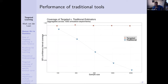Beyond that, traditional statistics relies on simple models like linear regression to be correctly specified. As a consequence, if you think about confidence intervals, due to the bias they will get narrower and narrower as sample size increases around something which is wrong, and so the coverage will go to zero.